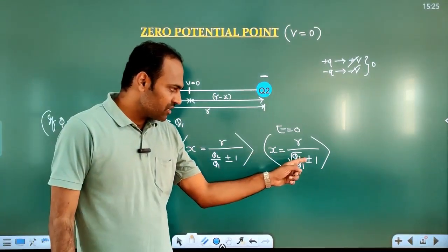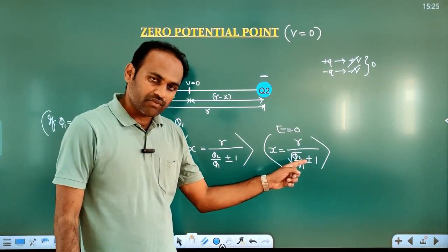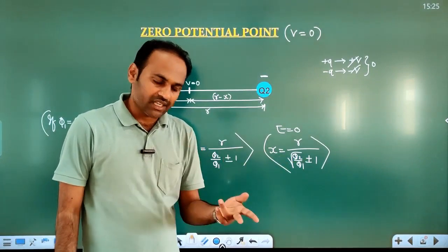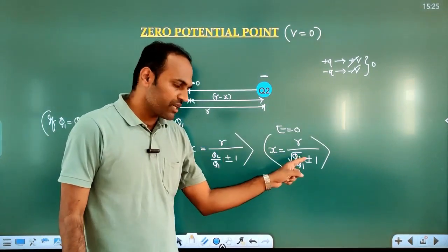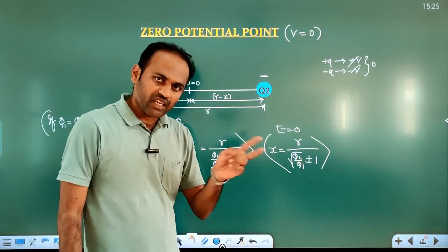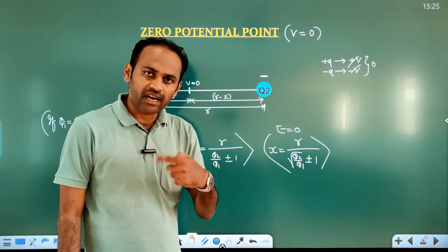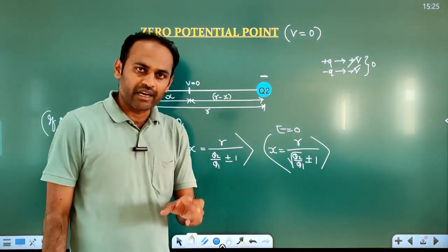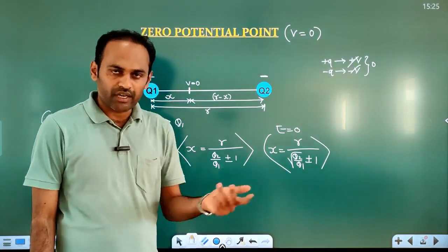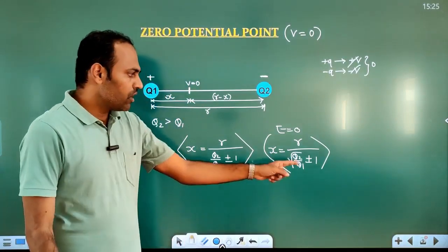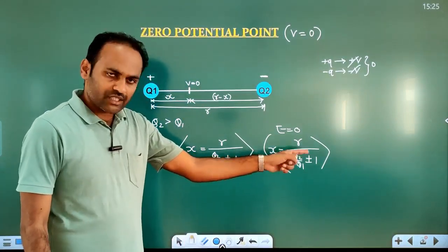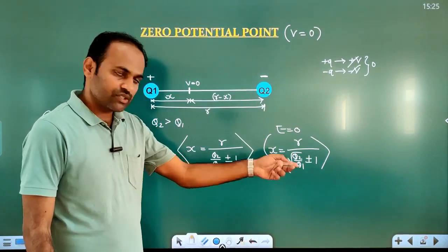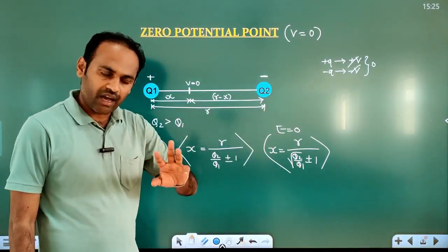If both charges are like charges, use plus in the formula. If both charges are unlike charges, use minus. So plus when charges are like, minus when charges are unlike.